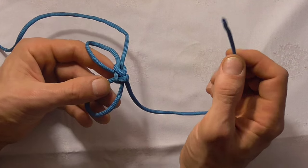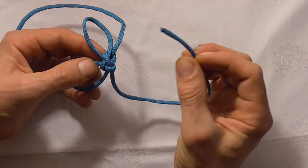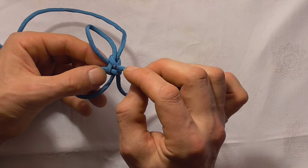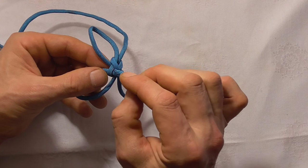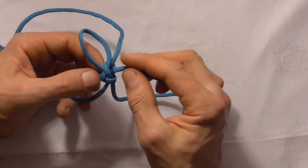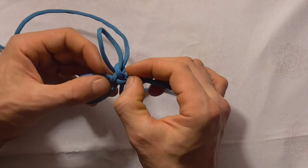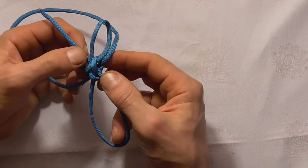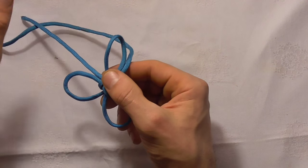Then to make the third petal, what I want to do is take my end and go through the center of the knot, under these two strands here. Just straight up through the center of the knot. Pull that through until it's about the same size as the other loops.